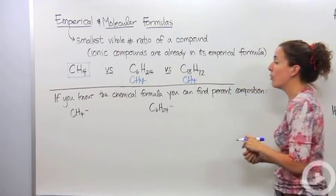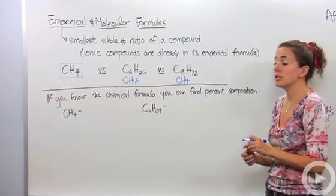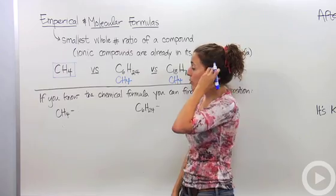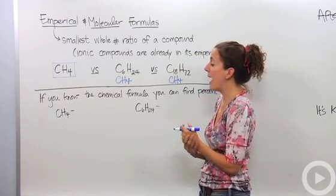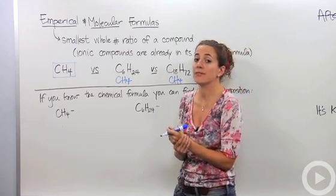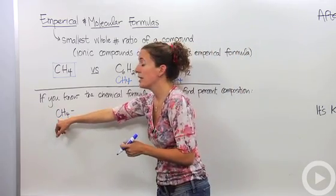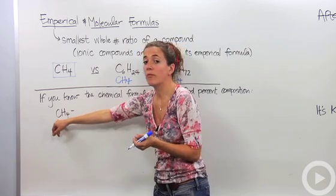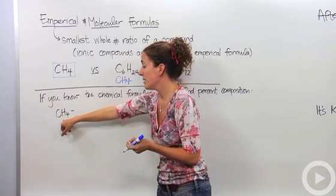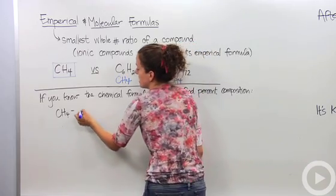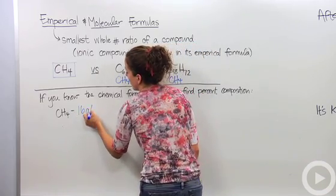Okay, so if you know the chemical formula, you can also find the percent composition. Let's take methane, CH4. So in order to find percent, percent is part of the whole. So we have to find the mass of the whole thing, then find the mass of each part. So the mass of the whole thing for CH4 is, looking at our periodic table, the mass of carbon is 12 grams, the mass of hydrogen is 1 gram times 4 is 4 grams, so 12 plus 4 is 16 grams. This whole thing has a mass of 16 grams for every mole.